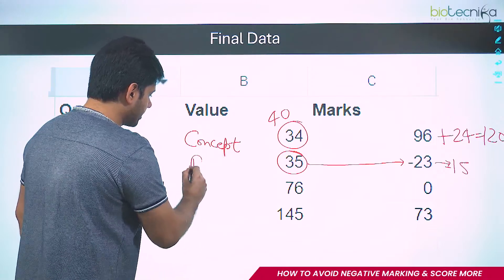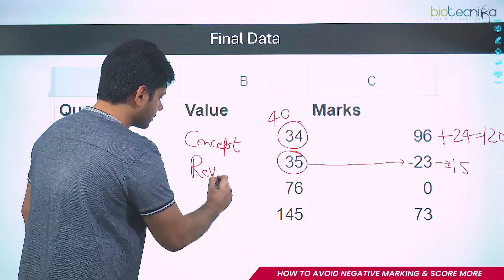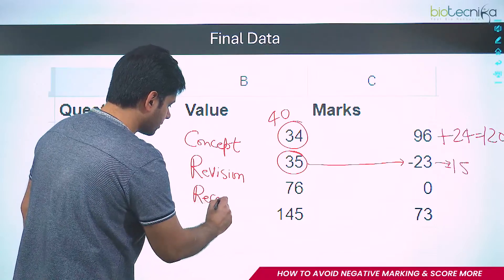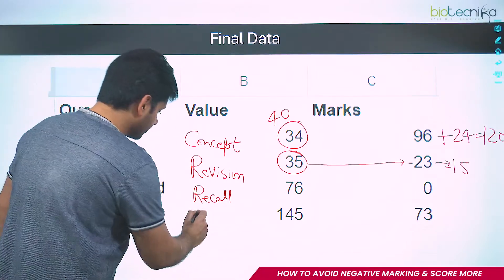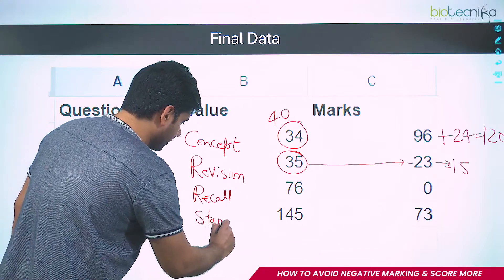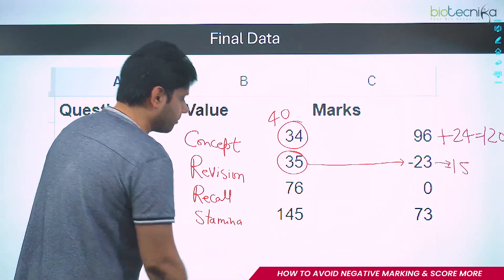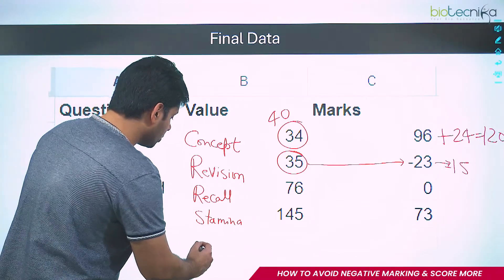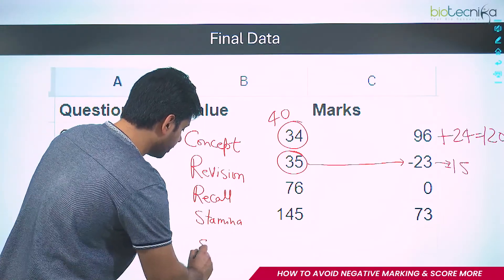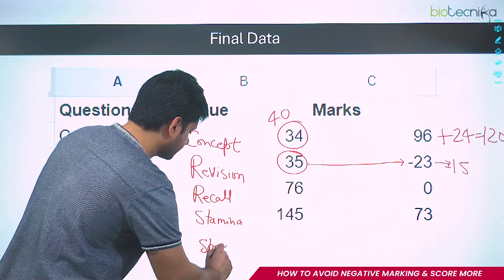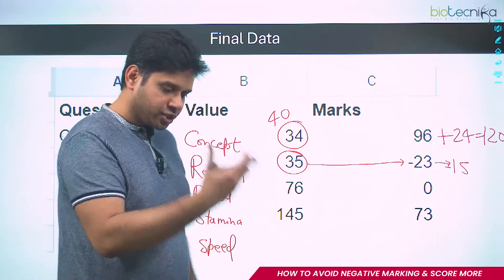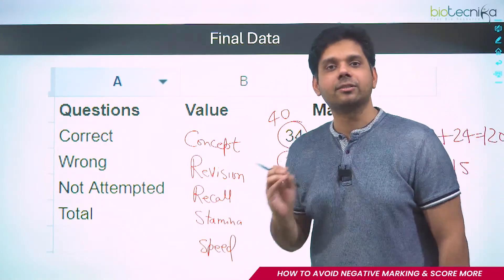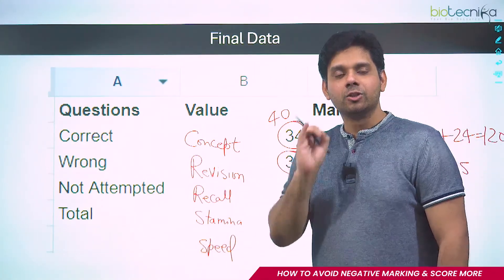The choices depend on your concept, your revision, your recalling capacity, your stamina and fatigue management. If you are fatigued, scared, or have no stamina — headache in the exam — things go wrong. You need the speed to comprehend: as soon as you look at a question, you should understand what it is asking, because Part C is all about that.